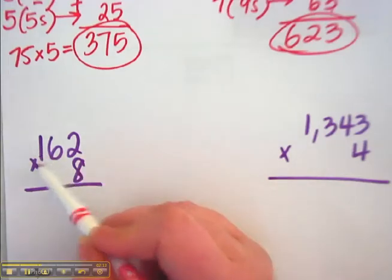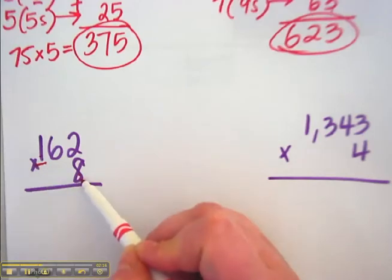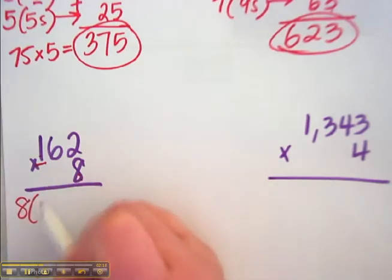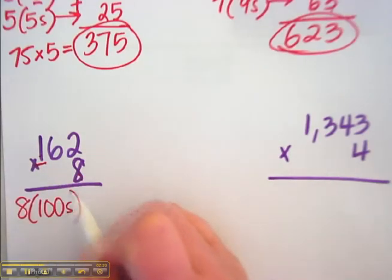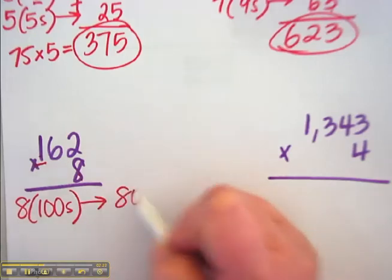This is the hundredths place. So this is the first step now. So first step. 8 one hundredths is 800.